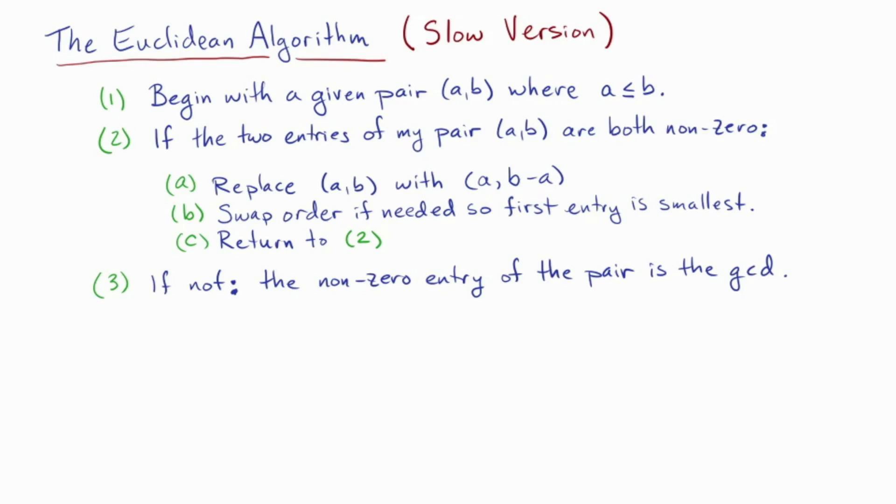The algorithm is basically the following. Subtract the smaller from the larger of your pair until you can't do it anymore. If you want to write it out for a computer, though, we might write it out a bit more carefully like this. Start with the pair A, B, where A is the smaller one. If the two entries are non-zero, then we're going to replace A, B with the pair A and B minus A. Then we will swap the order if needed, so that the first entry is the smaller one. And then we'll loop back and repeat so that we'll keep doing this over and over.